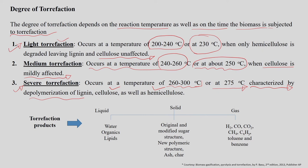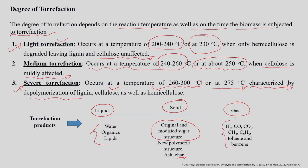The torrefaction products are in the form of solid, liquid, and gas fractions. The liquid fraction is mainly water and organic lipids. The solid product is mostly original and modified sugar structures and new polymeric structures along with ash and char. The gases produced also include toluene and benzene. Overall, the torrefaction process is more oriented towards the formation of the solid product.